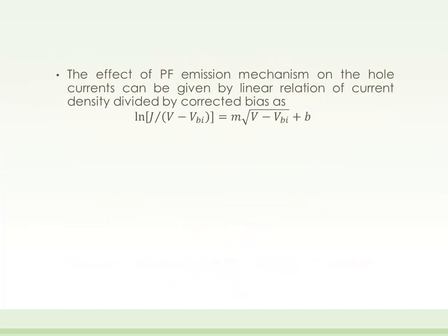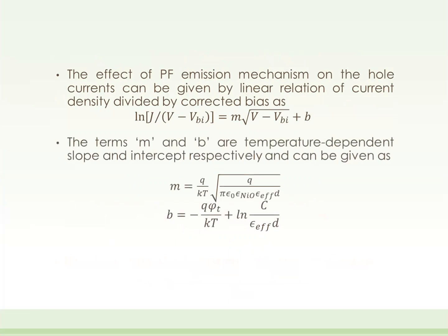The effect of PF emission can be given with a linear equation of current density divided by corrected bias, as shown in this equation. The terms M and B are the slope and intercept respectively, which can be given with these equations, and these are temperature dependent variables.